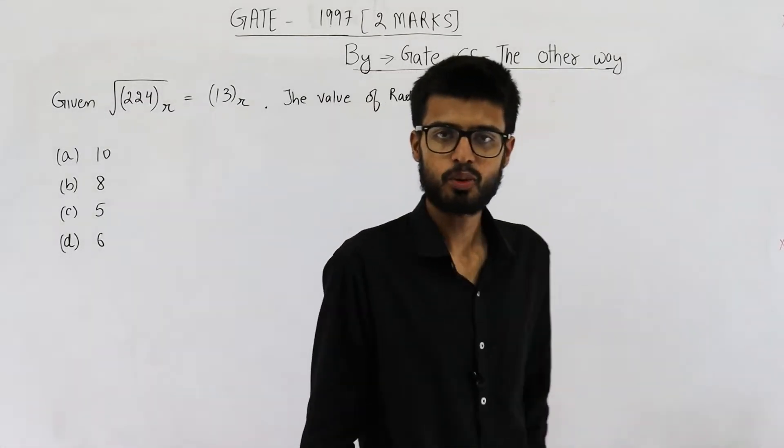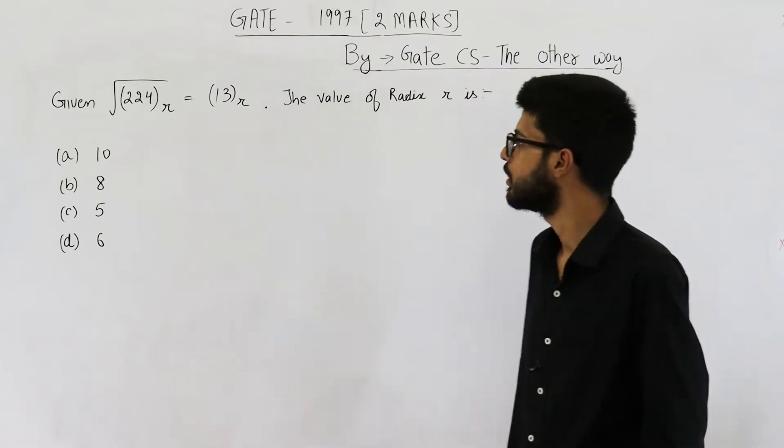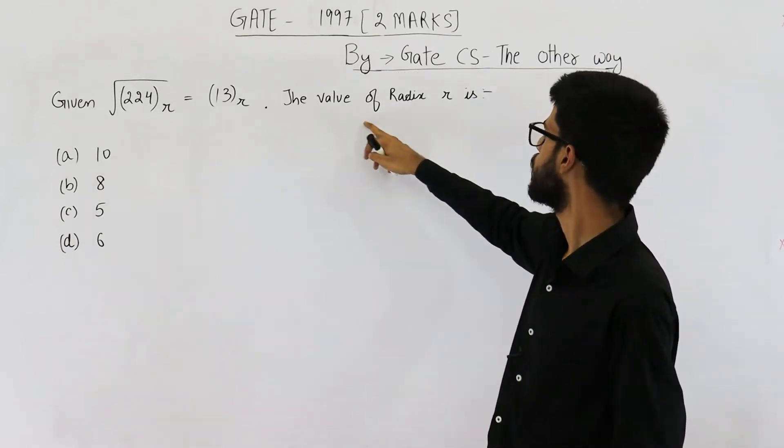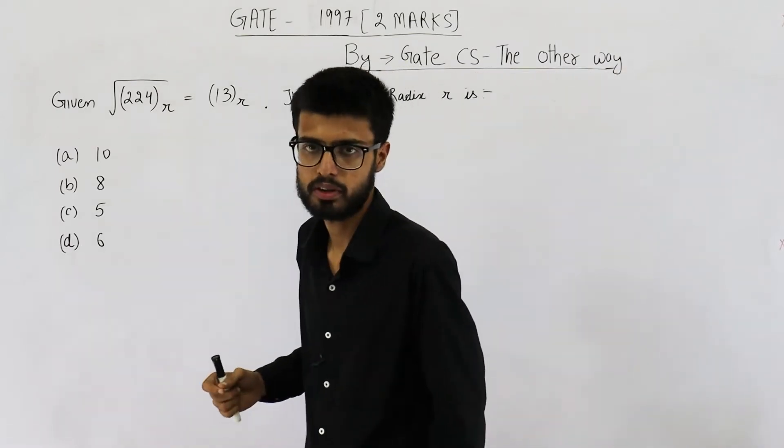Hello dear students, welcome back. This question is from GATE 1997 exam, it's for two marks. They have given you this equation and they're asking the value of radix r s. We need to determine base of this number system.